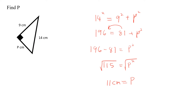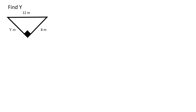Rounding to the nearest whole number, p is approximately 11 centimeters. This proves again that the hypotenuse is the longest side. Let's look at another example where we are asked to find y.